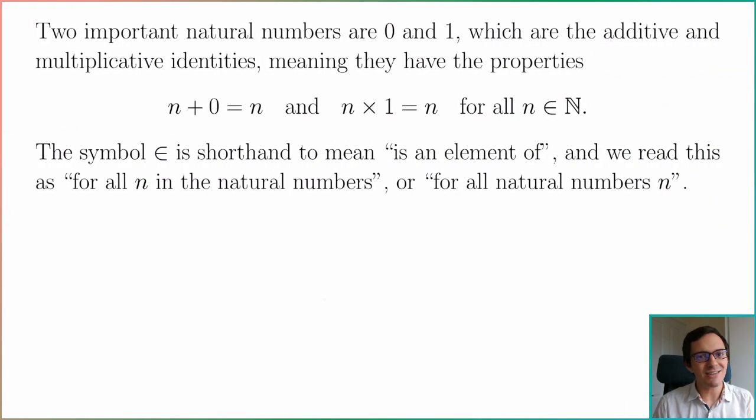I want to highlight two of the natural numbers. 0 which is the additive identity and 1 which is the multiplicative identity, which means that they have these properties that if you add 0 you get the same number that you were thinking of and if you multiply by 1 you have the same number that you were thinking of. These are true for all natural numbers and I've introduced some notation here.